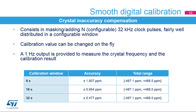For a 32-second calibration window, the accuracy is plus or minus 0.48 ppm. The total correction range is from minus 487 to 488 ppm. The accuracy resolution scales with the calibration window size. Final accuracy in the application will depend on the crystal parameter precision, temperature detection precision, and how often the software calibration procedure is launched.